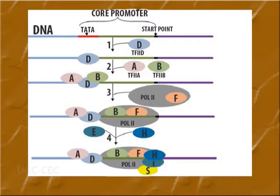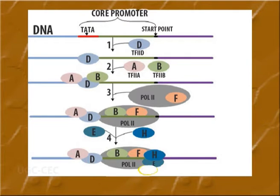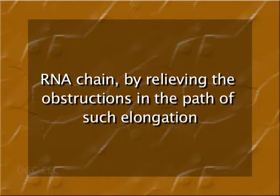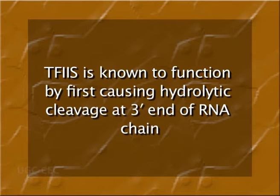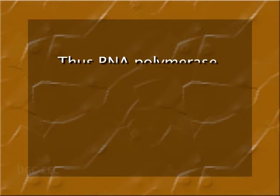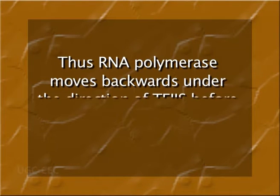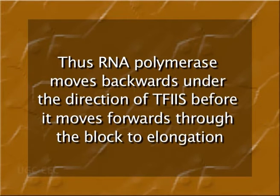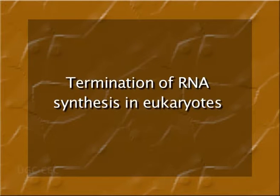Number two, transcription factor TF2S helps elongation of the RNA chain by relieving obstructions in the path of elongation. TF2S is known to function by first causing hydrolytic cleavage at the 3' end of RNA chains that are stuck and cannot elongate, thus causing RNA polymerase to move backwards under the direction of TF2S before it moves forwards through the block to elongation.